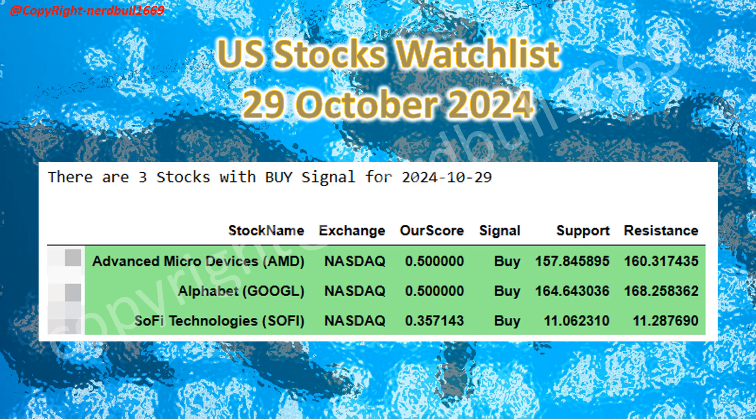Here are the US top watch list for 29 October 2024. Advanced Micro Devices (AMD) has a buy signal with support and resistance at 157.84 and 160.31 respectively. Alphabet (Google) has a buy signal with support at 164.64 and resistance at 168.25. Solify Technologies has a buy signal with support at 11.06 and resistance at 11.28.